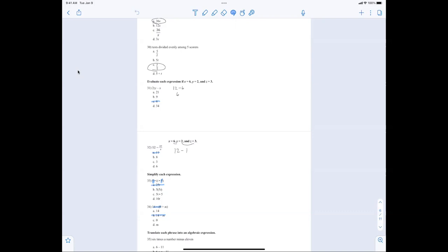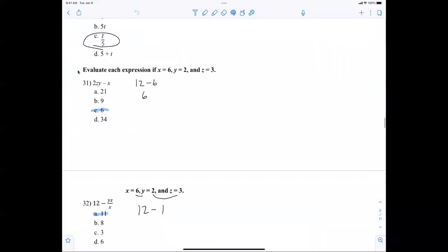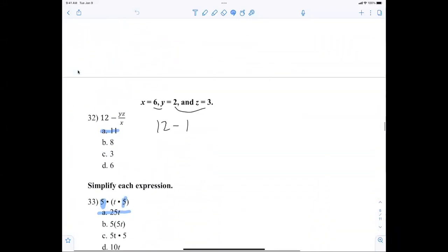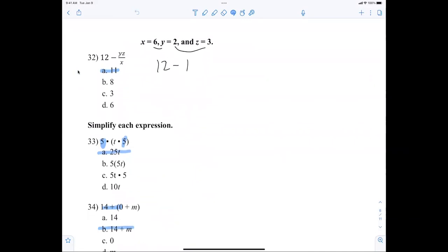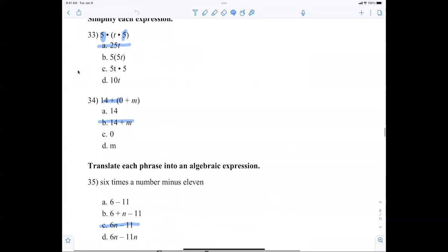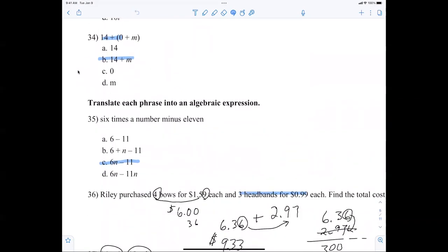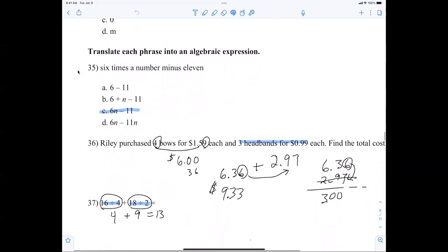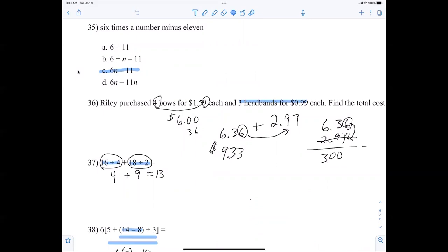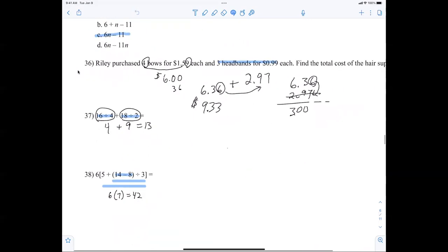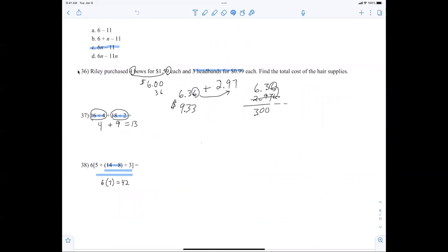Okay, so part two. So did we do number 31? You think so? All right. Well, if we didn't, the answer was six. All right. So let's take a look at 32. Is everybody okay with that being 12 minus one, which was 11? Anybody have any questions with that? And 33 simplified to 25T. 34 was just 14 plus M. 35, 6N minus 11. And 36 was 933. Everybody good with that?